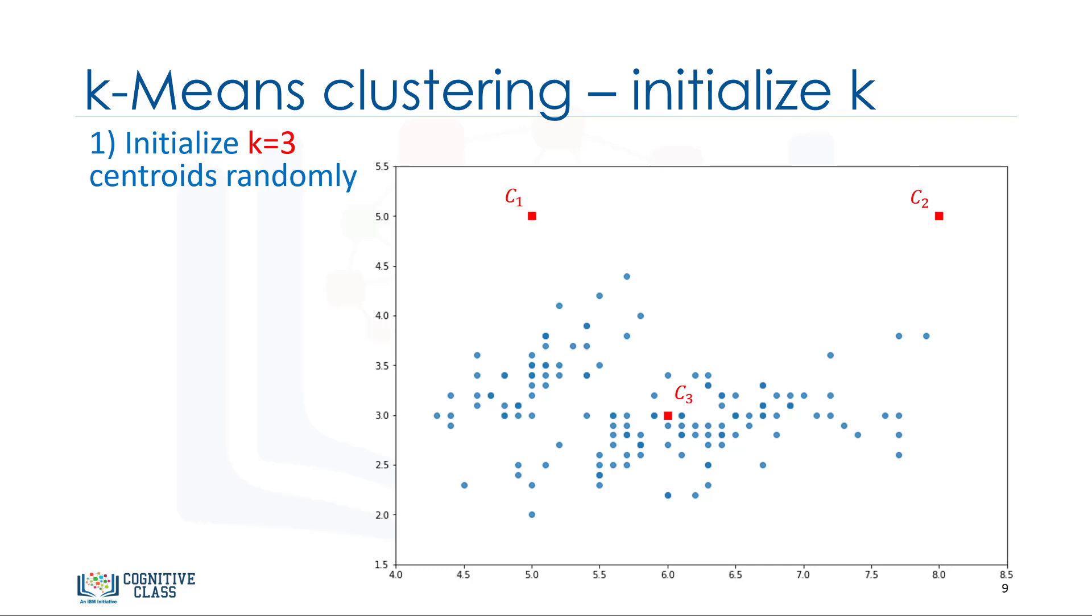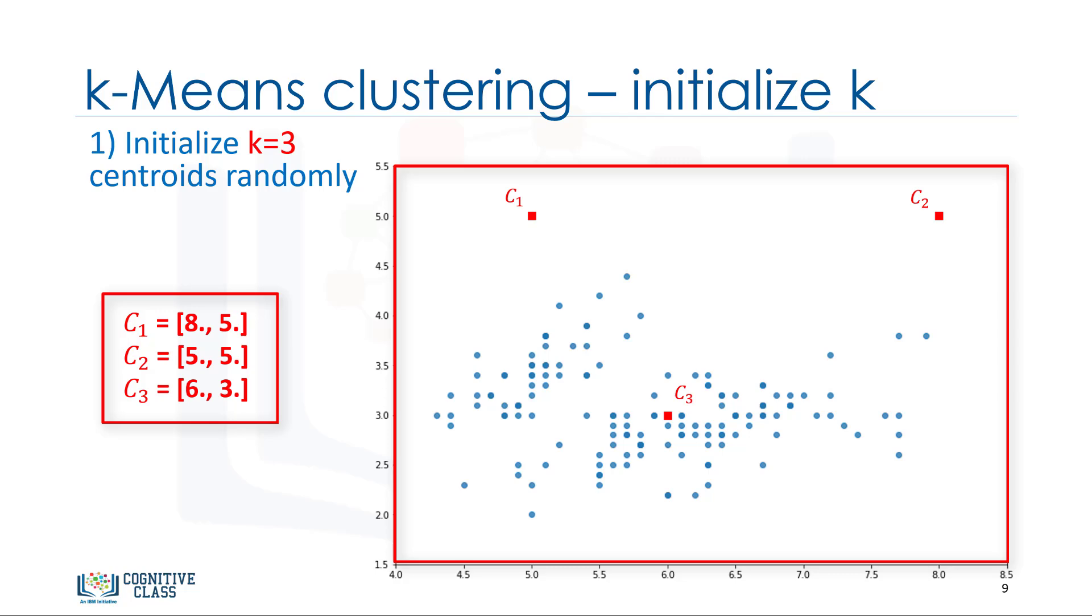There are two approaches to choose these centroids. One, we can randomly choose three observations out of the dataset and use these observations as the initial means. Or two, we can create three random points as centroids of the clusters, which is our choice that is shown in the plot with red color.